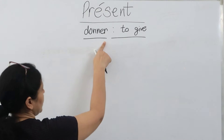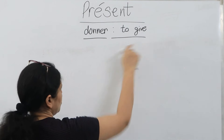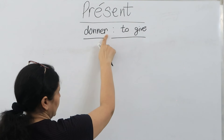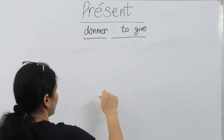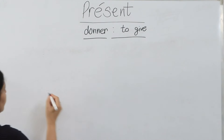We are picking the verb 'donner,' which means 'to give.' It is ending with -er, so it belongs to the first group, the -er ending verbs.